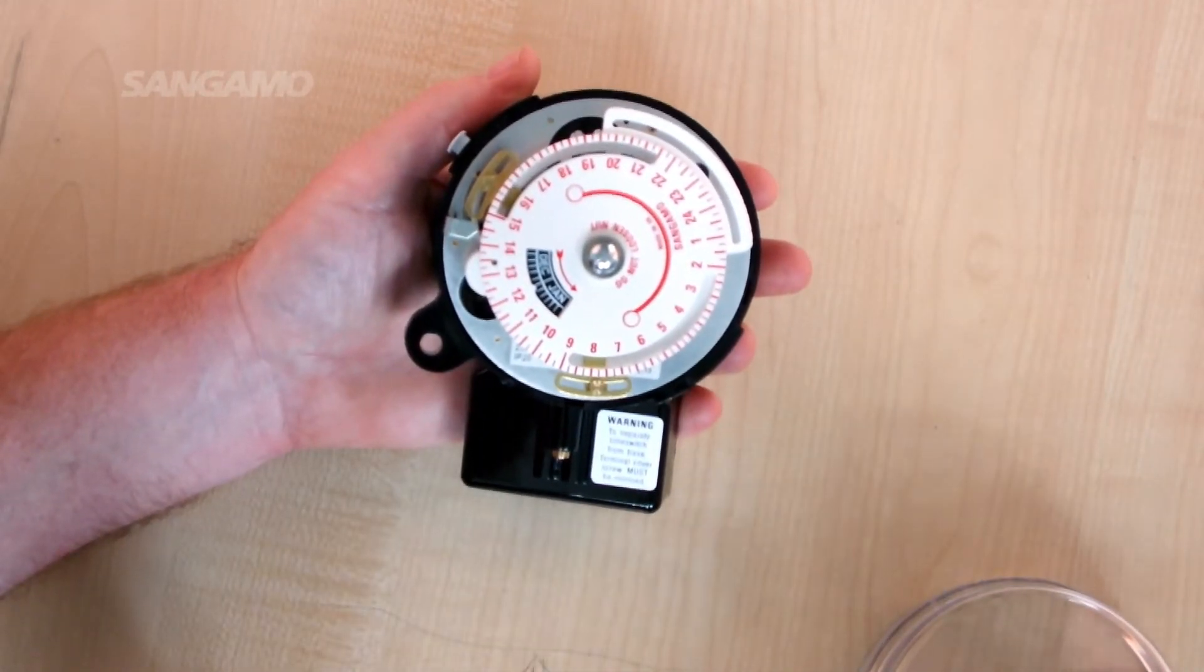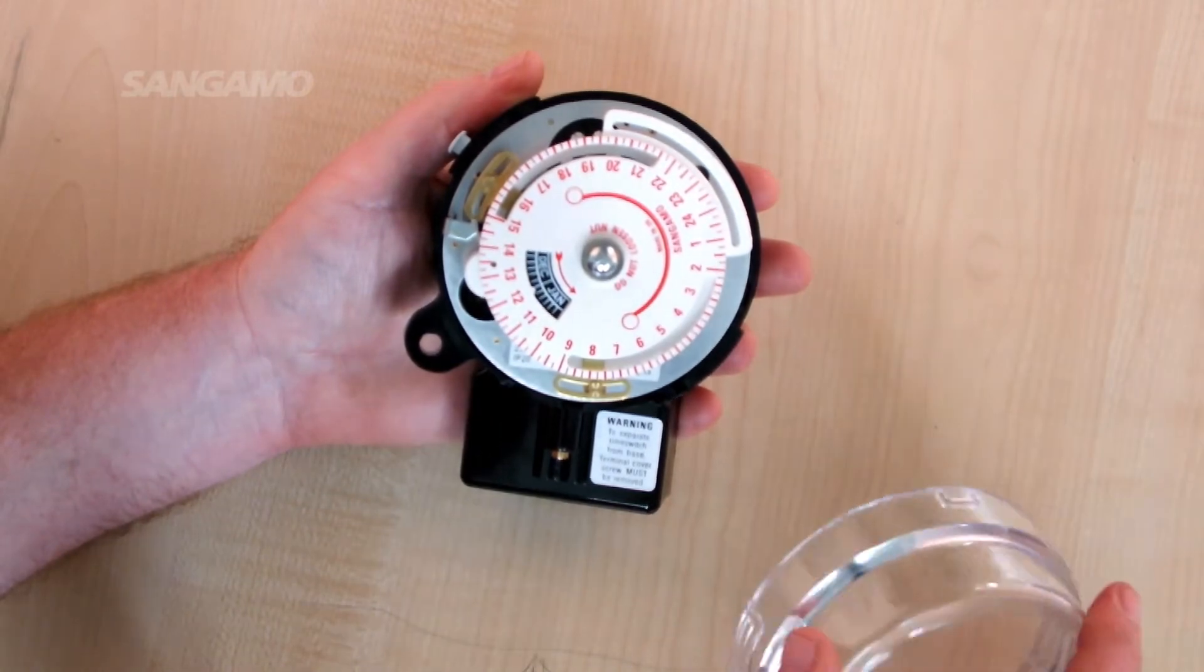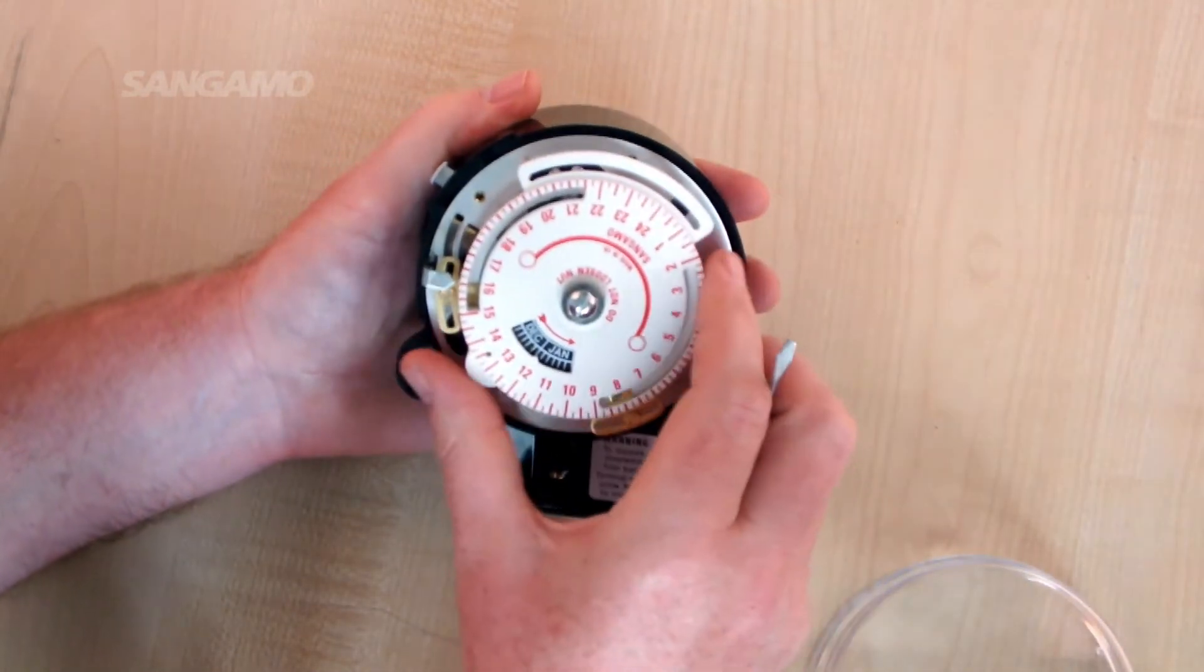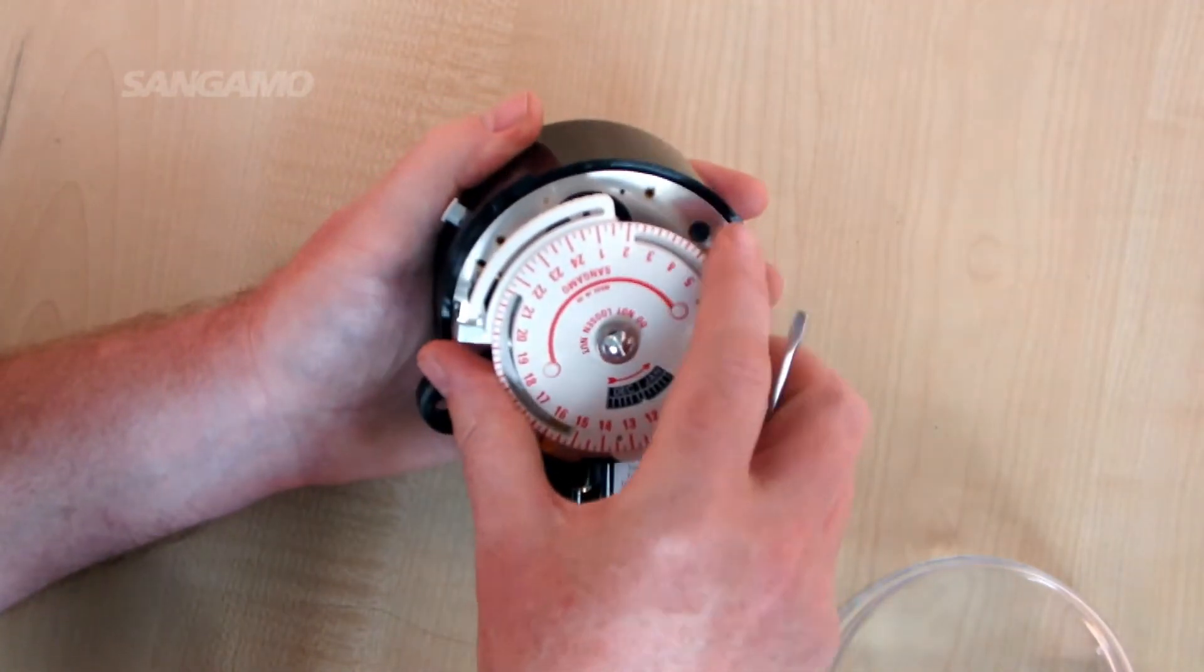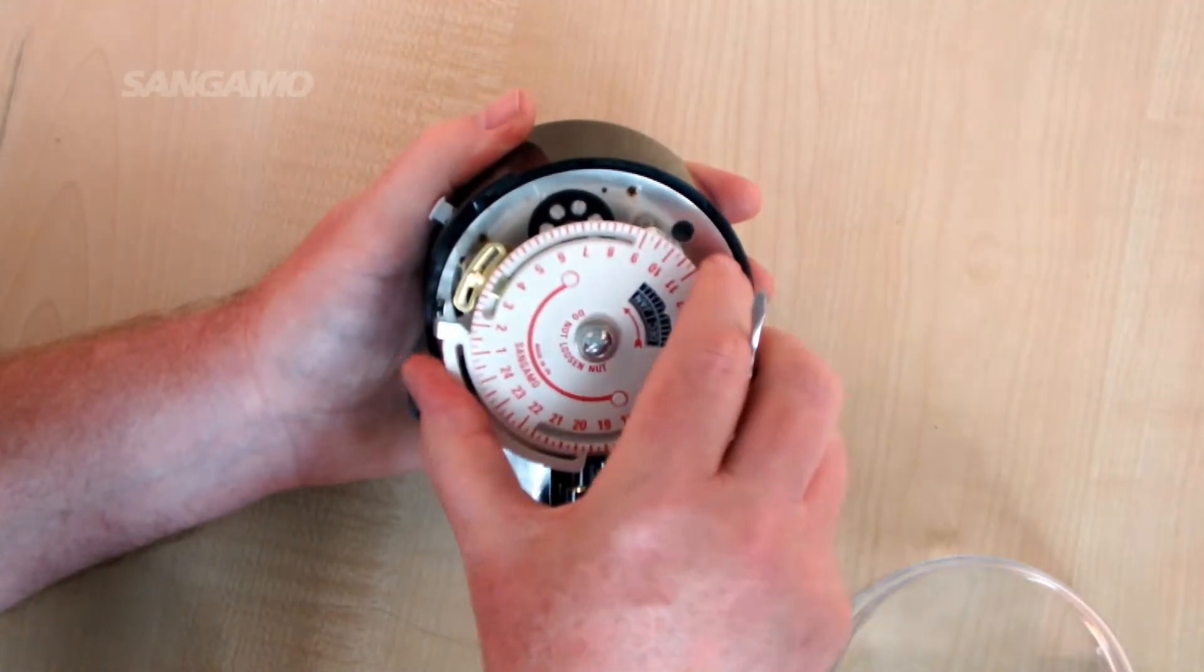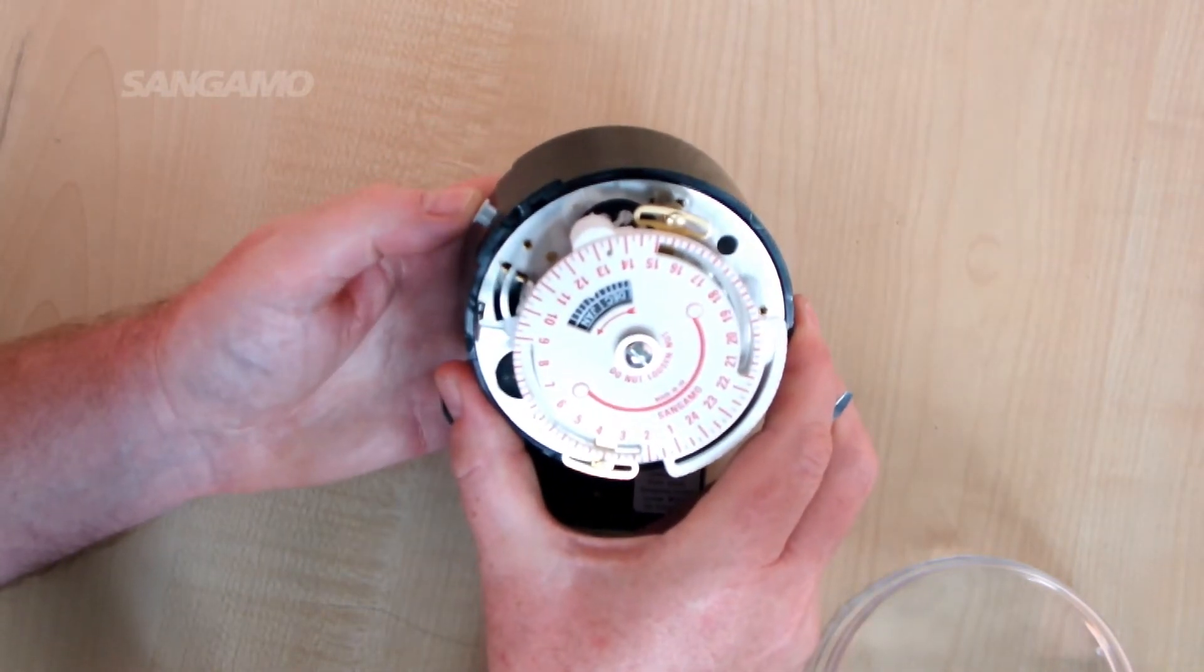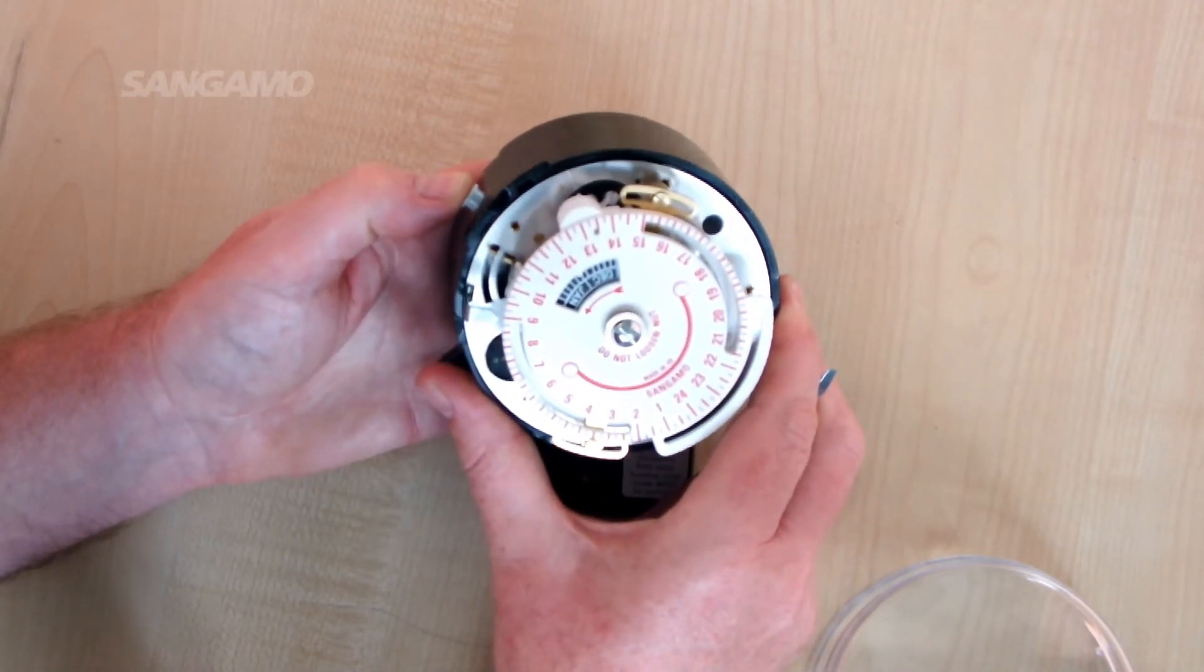Once that's done, apply power and do some basic functional checks by turning the dial by hand and also using the manual button.